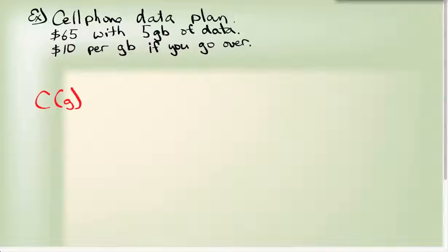Now my interval in gigabytes here is from zero to five. That's our first interval, including five, because I mean if you use exactly five gigabytes you don't have to pay any extra. As soon as you go above five and up to infinity, you're paying an extra ten dollars per gigabyte.